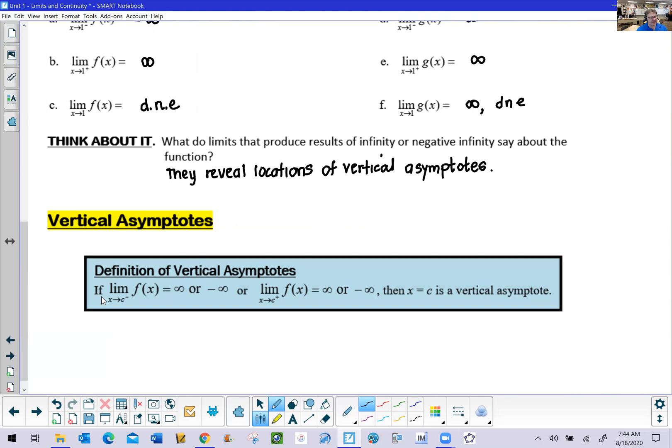Simply enough, if you have a limit of a function where x approaches some constant, let's say from the left, and you are producing a positive infinity or negative infinity result, or if you have that same limit of f of x as x approaches c from the right that produces either an infinity or negative infinity result, then that means that x equals c has to be an equation of a vertical asymptote. And it's really important that I emphasize this word or, because you could have a situation where only one side limit produces that infinity result, and that's all that it would require for you to have an equation of a vertical asymptote.